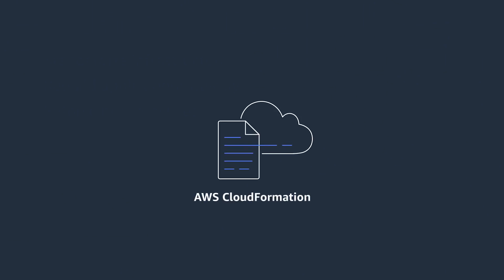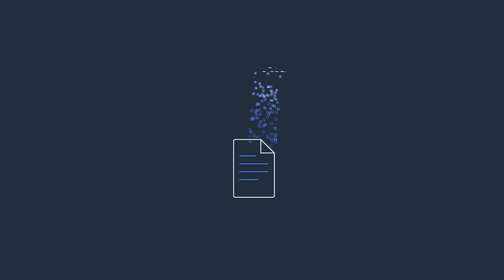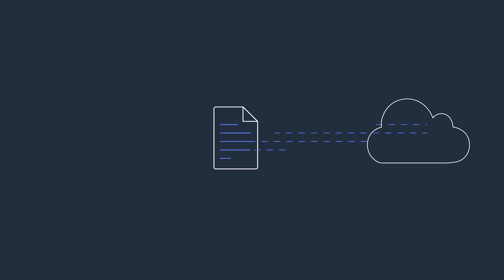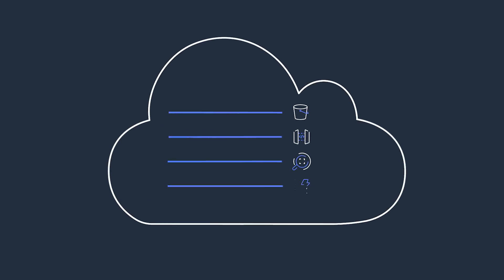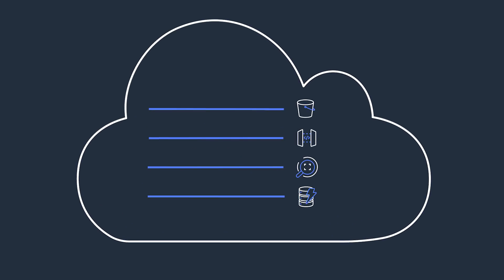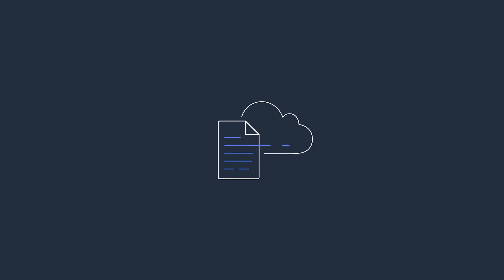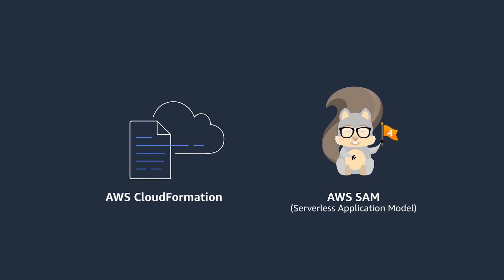AWS CloudFormation lets you describe and provision the infrastructure in your cloud environment. It allows you to use a text file to model the resources needed for your application. This file serves as the single source of truth for your cloud environment. You can then deploy it in an automated and consistent manner. When you're building serverless applications on AWS, you can use AWS CloudFormation directly, or choose the AWS Serverless Application Model, also known as SAM.